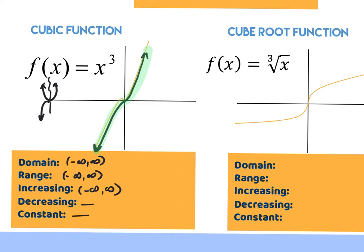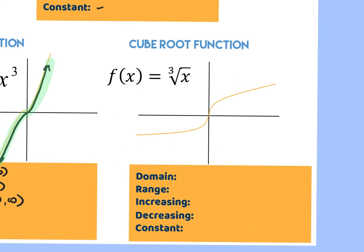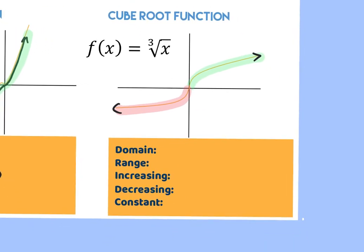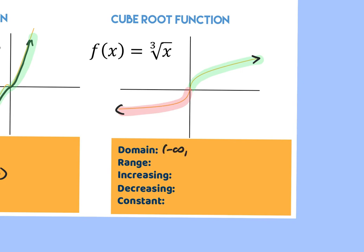The last parent function to memorize is the cube root function. It's like the square root above the x-axis — that same arc shape — but underneath it flips and goes back the other direction, with arrows in both directions. Domain is not restricted because you can cube root anything: negative infinity to positive infinity. The range is also negative infinity to positive infinity. From left to right it is increasing — negative infinity to positive infinity — with no decreasing and no constant.